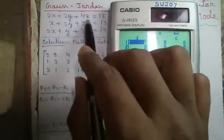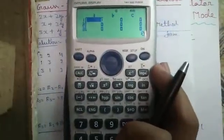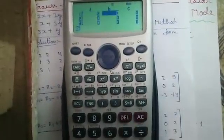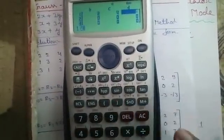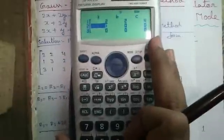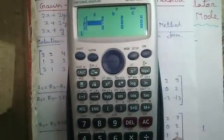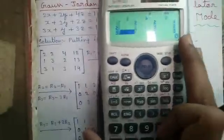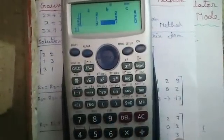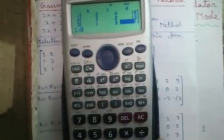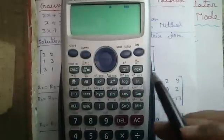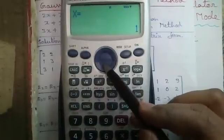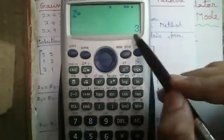Just enter the coefficients 2, 2, 4 and 18. Similarly 1, 3, 2, 13. And 3, 1, 3, 14. Press equals to. So x equals to 1, y equals to 2 and z equals to 3.